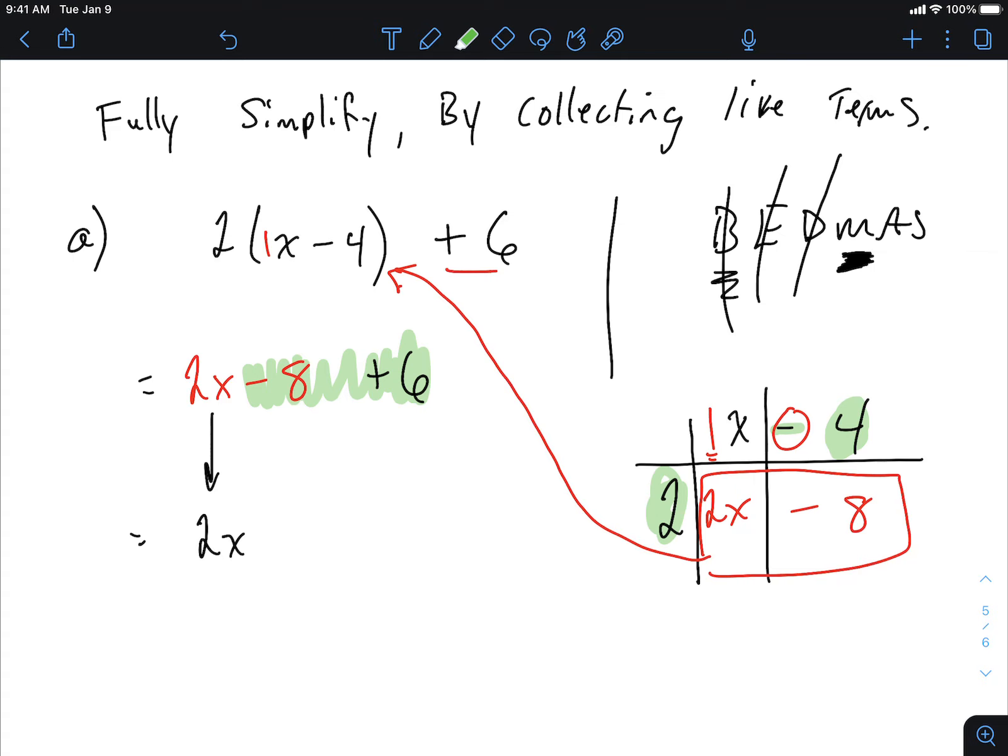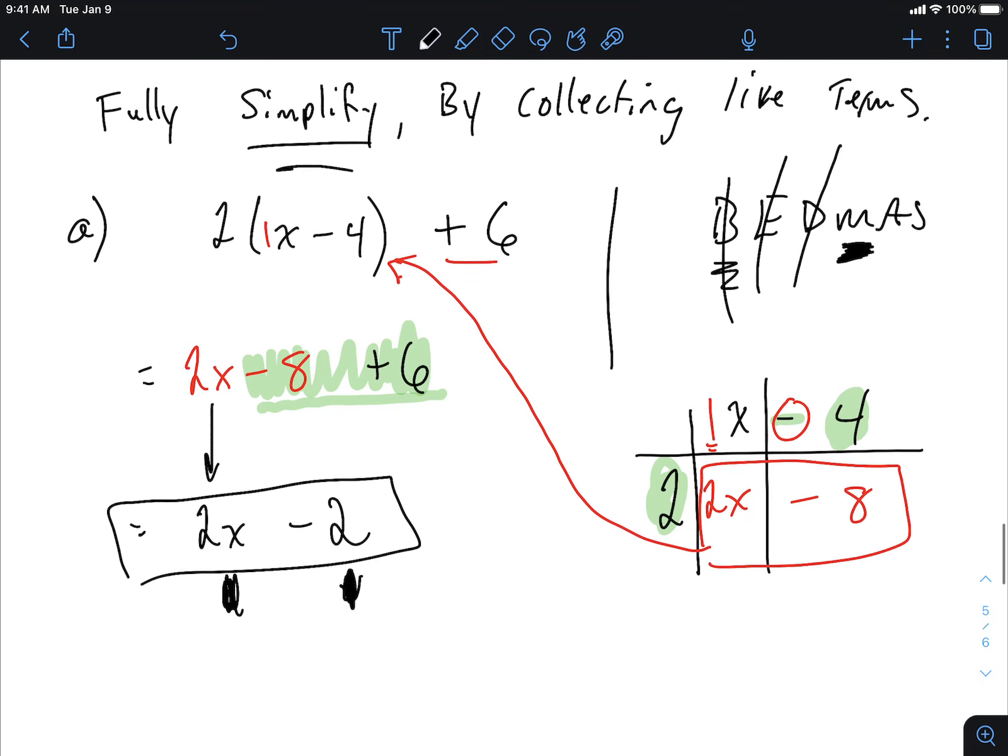So I come back to my answer. I say, okay. Negative 8 plus 6. That should be negative 2. And that's your final answer for this. Fully simplified. Why is it fully simplified? Because I cannot add these two things together anymore. There's nothing else to be done. There are no more like terms to combine. You're done.